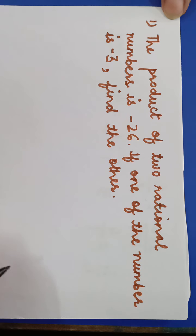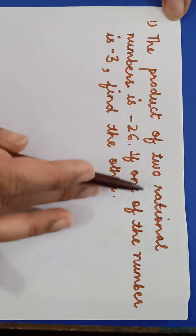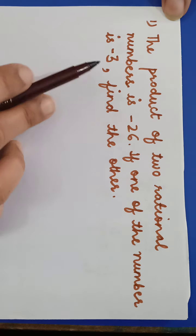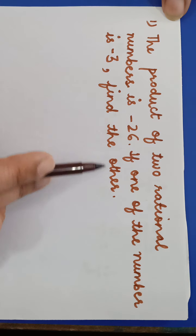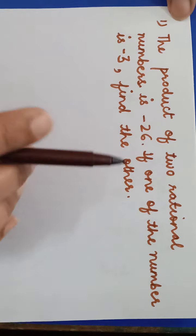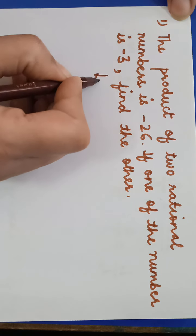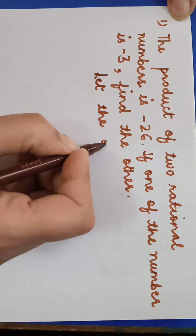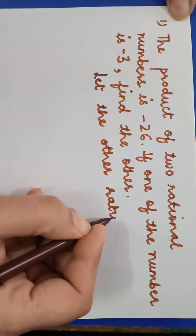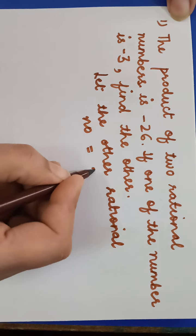Let us start. Question 1: the product of two rational numbers is minus 26. If one of the numbers is minus 3, find the other. The language of the question is clear, so we have to find the rational number. Let the other rational number be equal to x.